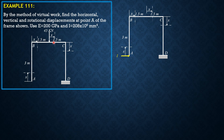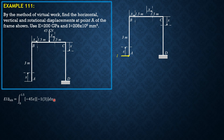Since big M is zero for the first segment, we begin with this segment. The moment equation here is negative, so: EI × delta_A_horizontal = integral from 0 to 1.5 of (−45X)(−1 × 3) dx. The moment arm is horizontal at 3, and it's negative because it is a counterclockwise moment — it should be clockwise when considering forces to the left. The virtual force moment is negative 1 times 3.